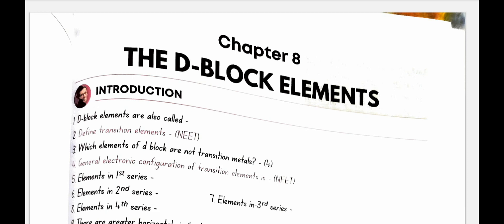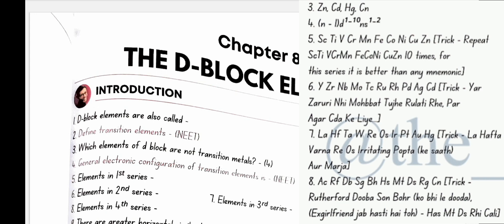Which elements of D-block are not transition metals? Zinc, CD, HG, CN. This is very important.